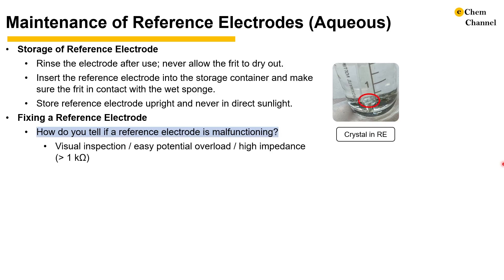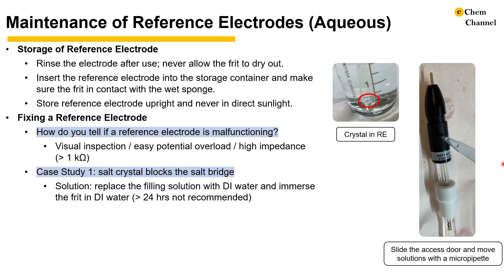If the electrode looks normal, you may also check the impedance. If the impedance is greater than 1000 ohms, there might be salt crystals clogging the frit. If clogs happen, we can dissolve them by replacing the filling solution with DI water and immersing the reference electrode in DI water. To replace the filling solution, slide the access door and remove and add solutions using a micropipette. Use plastic pipettes to avoid breaking parts inside the electrode. After the crystal dissolves, replace the DI water with the appropriate filling solution.